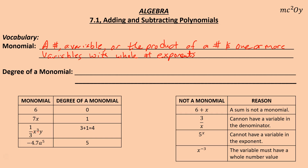Things that are not a monomial: six plus x — cannot have an addition sign, cannot be a sum. Three divided by x — cannot have a variable in the denominator. Five to the power of x — cannot have a variable in the exponent. Can't have a negative exponent either, because the variable must have a whole number value, otherwise your variable ends up in the denominator.